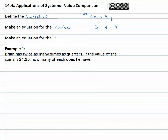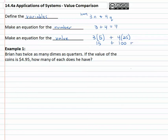Then we'll make another equation that has to do with the value of each coin. There are three nickels worth five cents each, so to get the total value we multiply by five — that's fifteen cents in nickels. There are four quarters, and multiplying by twenty-five cents gives a hundred cents total. Adding them together gives us a hundred fifteen cents total value.